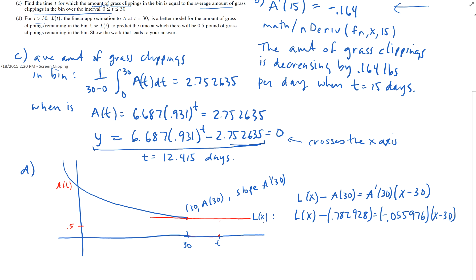Again, kind of a pain with all these decimals, but you got your calculator. So here's my equation, and again, remember this is my Y value, L of x is my Y, and we want to know, when will there be 0.5 pounds of grass? So that's going to be, L of x is going to be 0.5, and I want to figure out what x is.